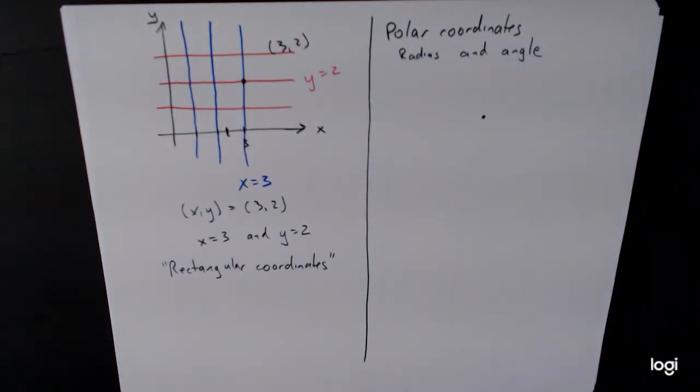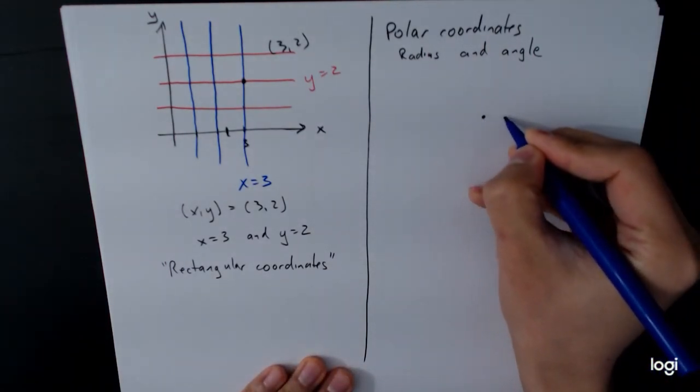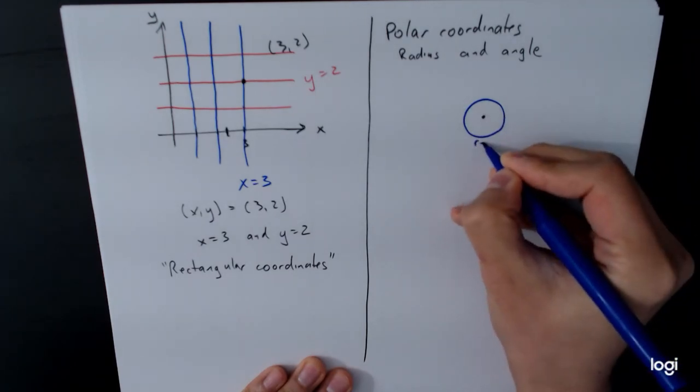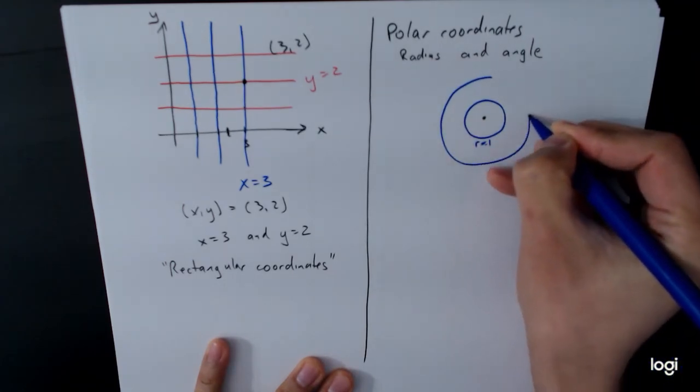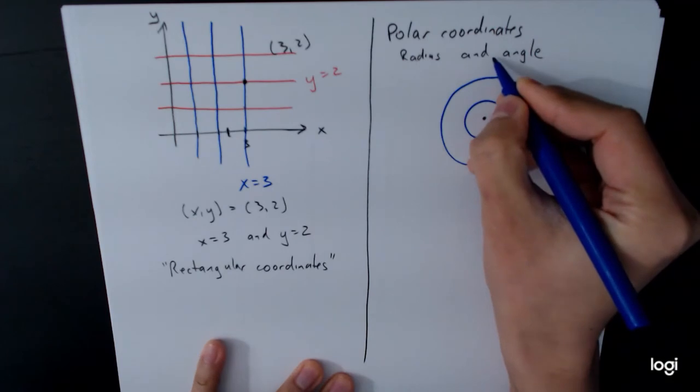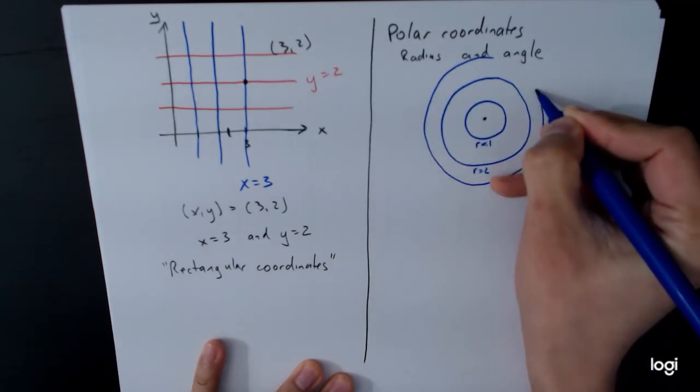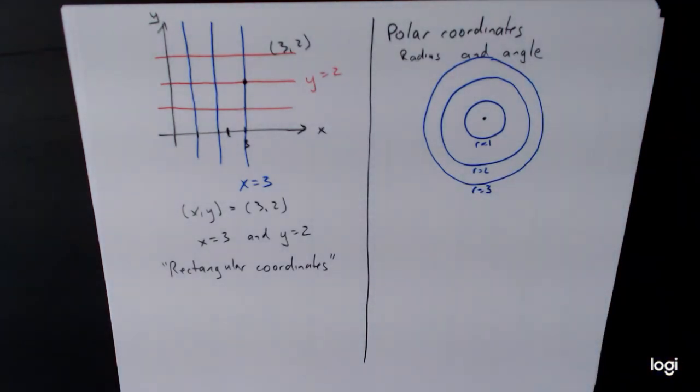So what do we mean by that? Well, what we mean is that if that's the origin, we have a circle of radius 1. R equals 1. We'll have a circle of radius 2. R equals 2. And we can even now squeeze it in. Circle radius 3. So those are radii, the radius.